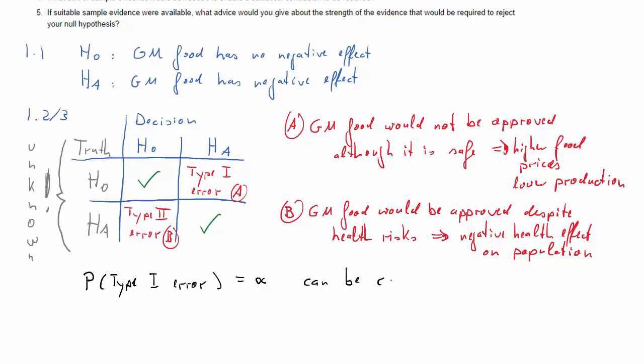Of course we don't know whether we are in that situation, but the alpha, the significance level, that is the probability for the Type I error, and this can be controlled by the researcher. However, the probability for the Type II error cannot be controlled. That's if HA is true but we do not reject H0 in our testing procedure.